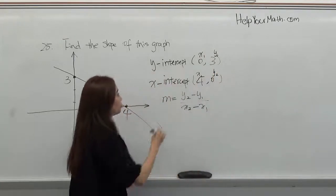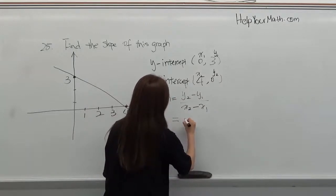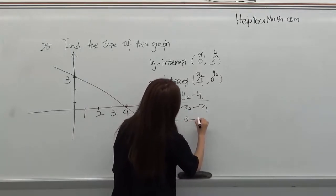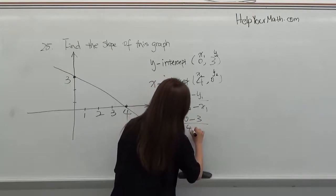We just substitute these numbers into the equation. Then we get 0 minus 3 and 4 minus 0.